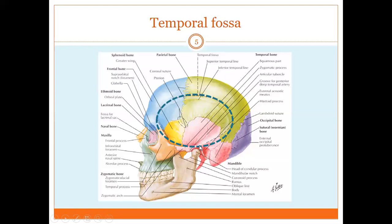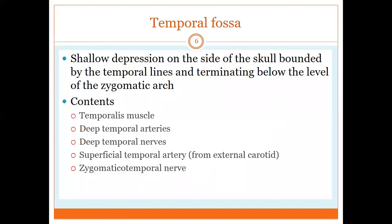The content of the temporal fossa is why it is so important. It contains the temporalis muscle. Under the temporal muscle we have the anterior and posterior deep temporal nerves, arteries, and veins. Over the temporal fascia, which covers the temporal muscle from the outside, we find the superficial temporal artery — one of the two terminal branches of the external carotid — as well as the superficial temporal vein, auriculotemporal nerve, and zygomaticotemporal nerve to innervate the skin over the temple.